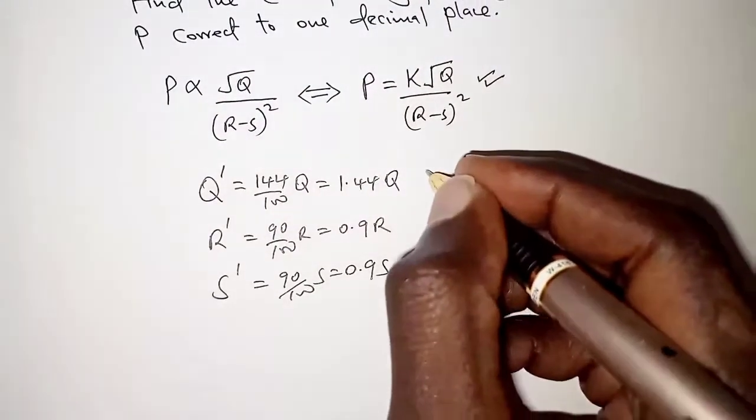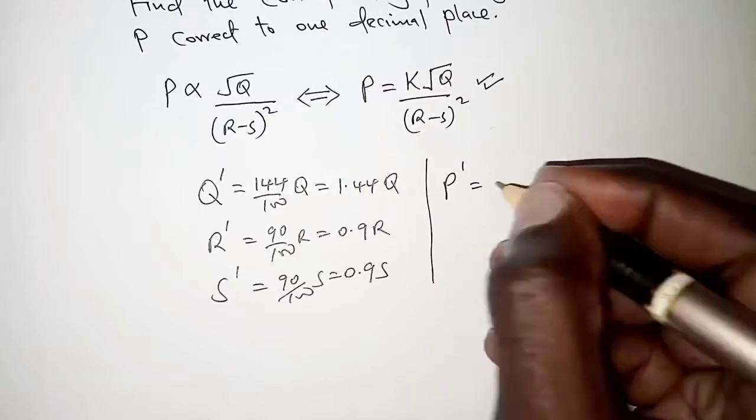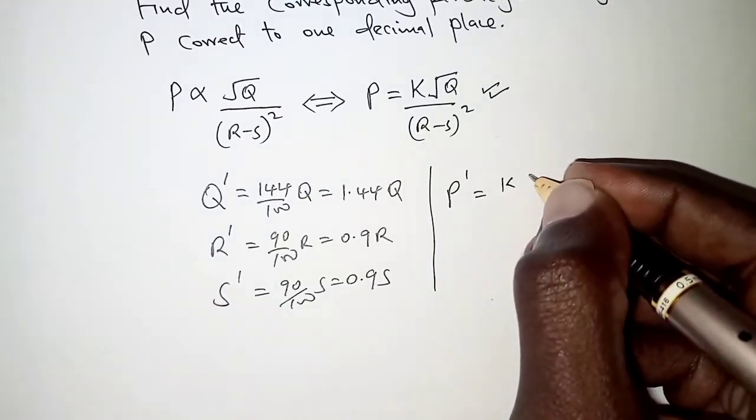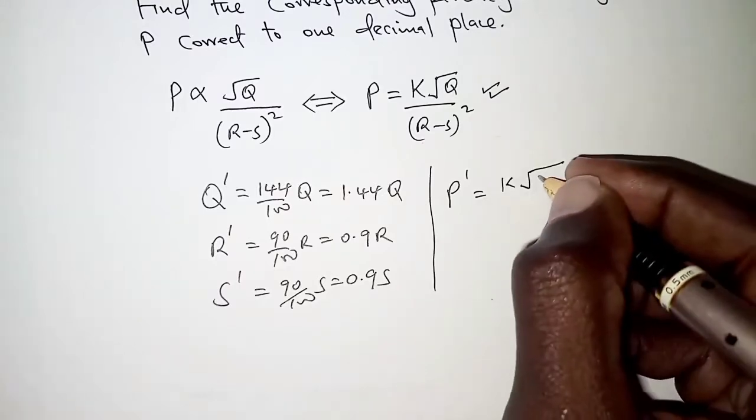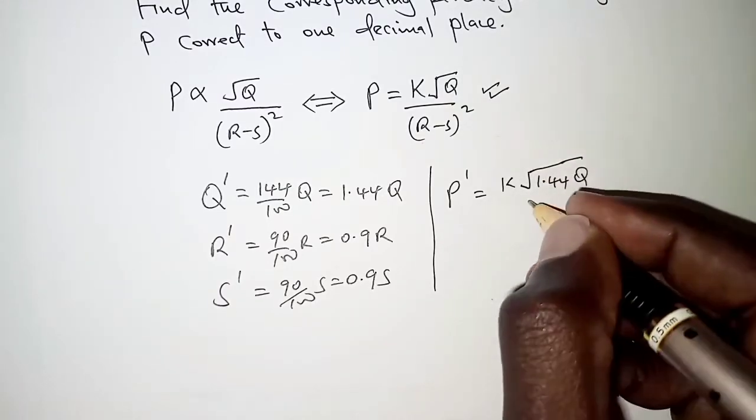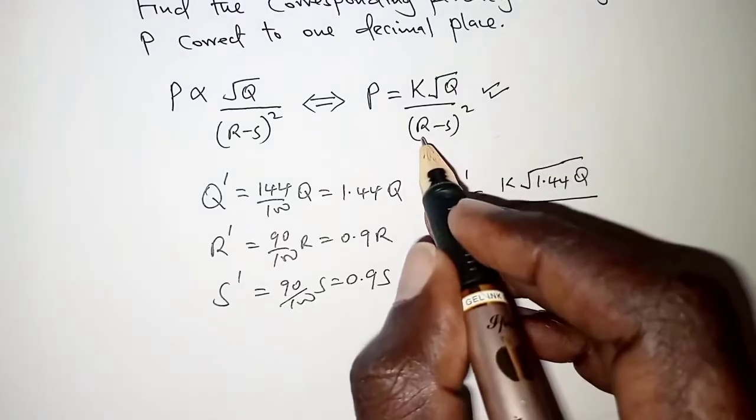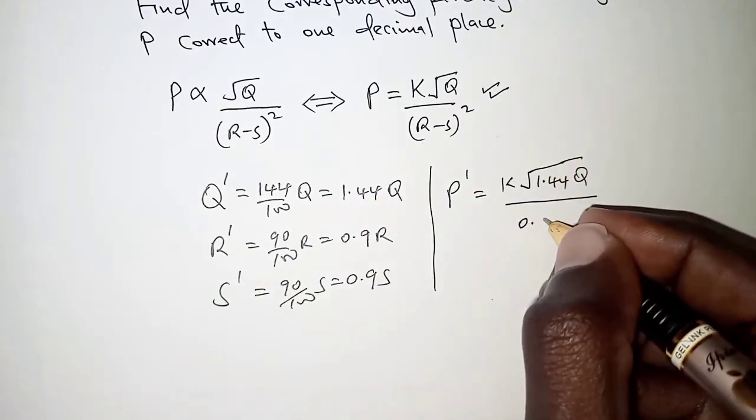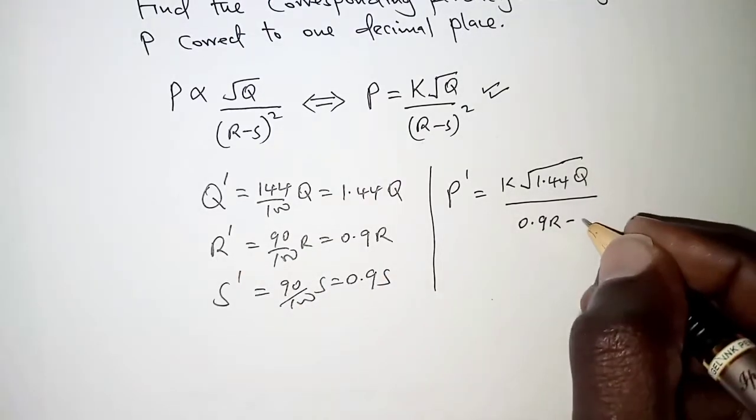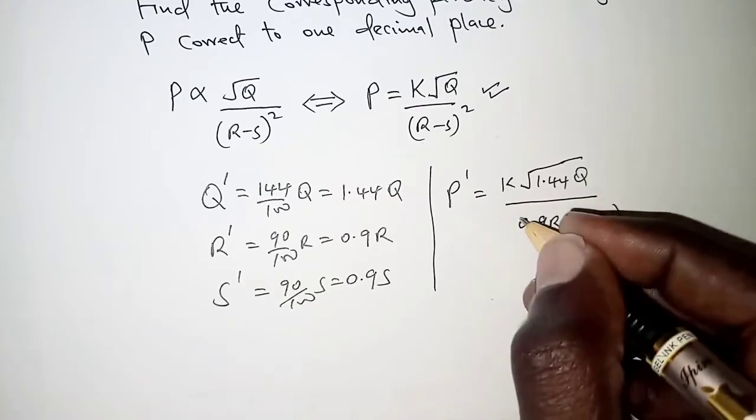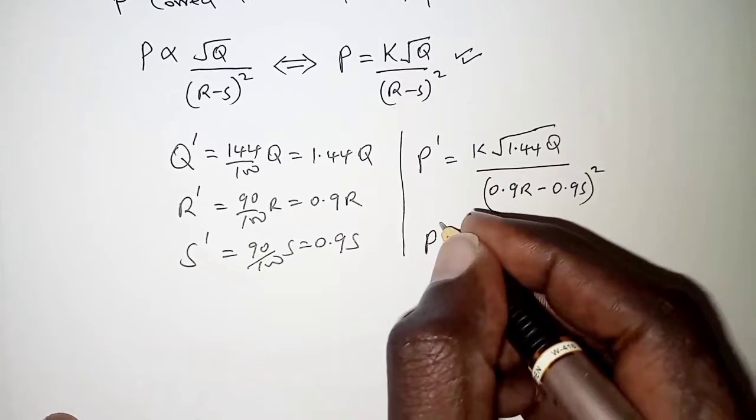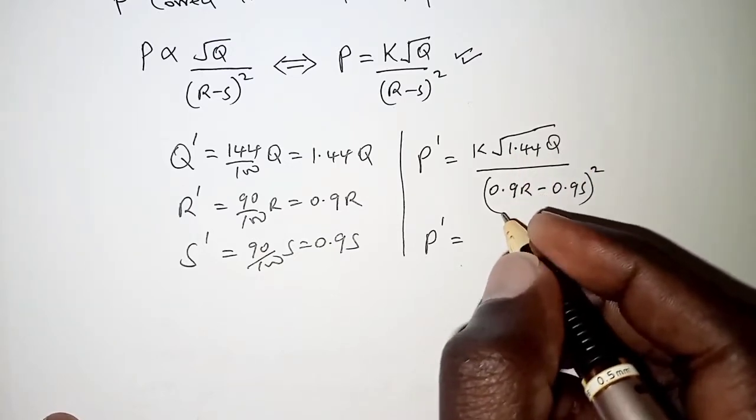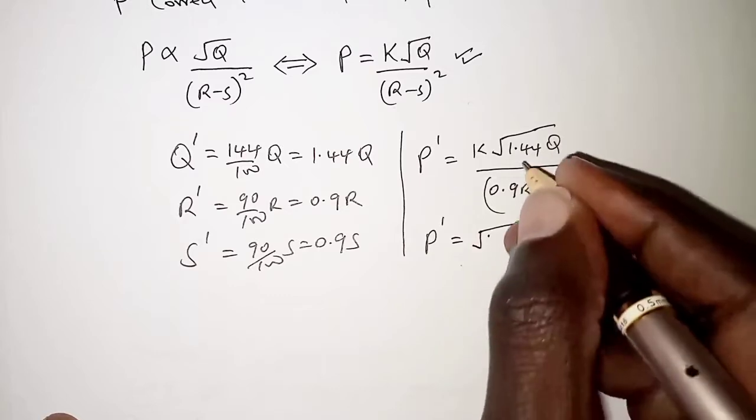So that would therefore mean the new value of P will be, we are rewriting this with the new values. So we have K root Q prime, and Q prime is 1.44 Q. All over R minus S, so we have 0.9 R for the new value of R minus 0.9 S, and then this is squared.